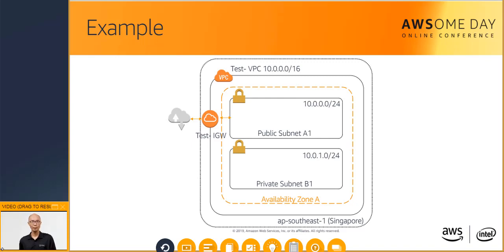For the network administrators in the audience, you may find the network design diagram somewhat familiar. This is because the public subnet will map nicely to your DMZ and the private subnet will map to your production network in an on-premises environment.